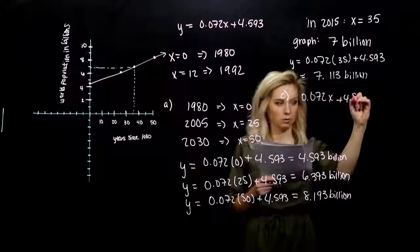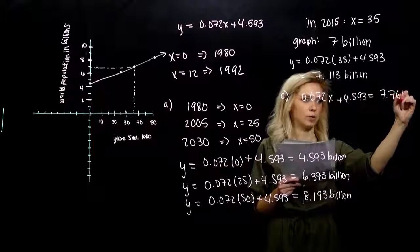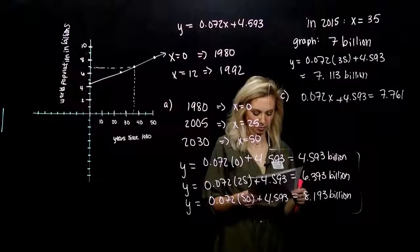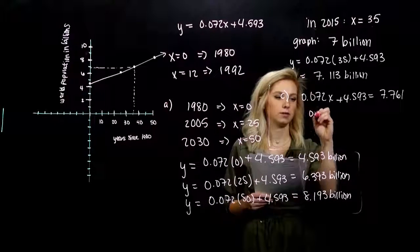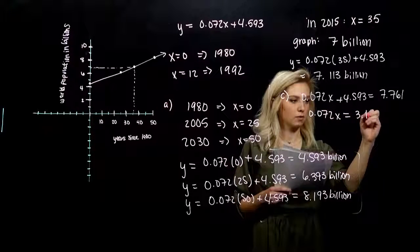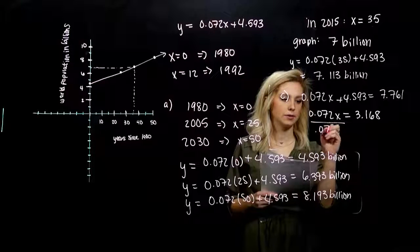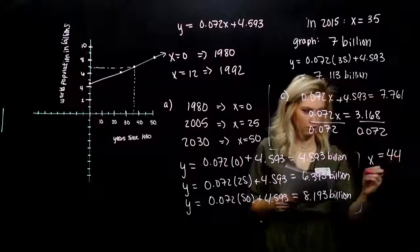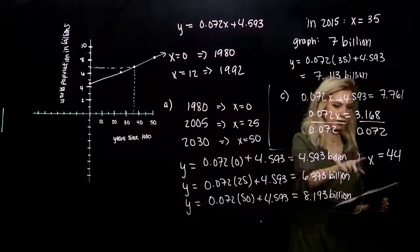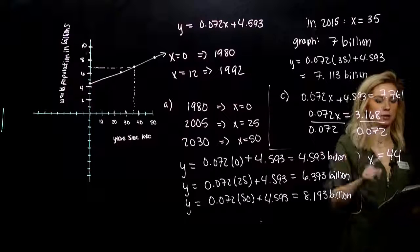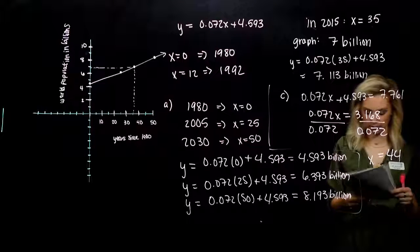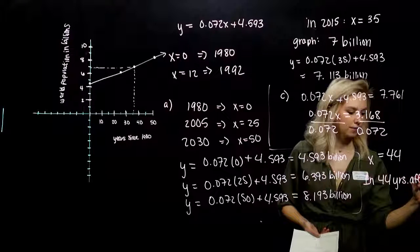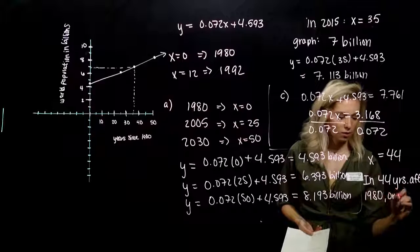I know the world population, 7.761. That's what I'm working towards. I'm trying to solve for x. We want to figure out the number of years. If we subtract 4.593 from both sides, we're looking at 3.168 on the right. I want x on its own. X is equal to 44, around there. 44 years after 1980 is when our population is going to hit 7.761 billion. In what year? In 44 years after 1980, or in what?